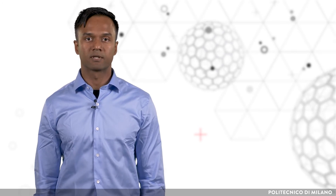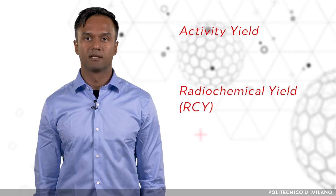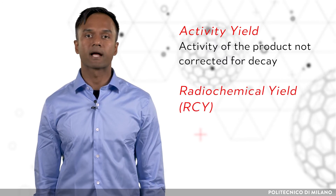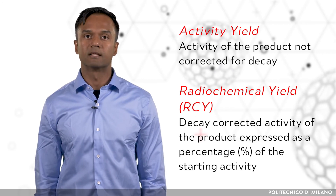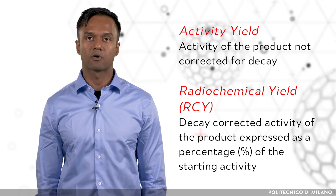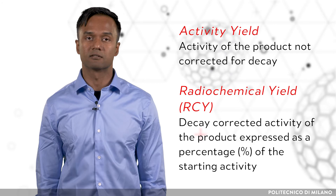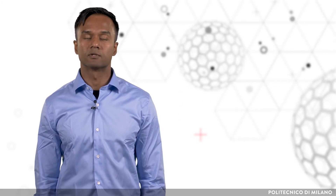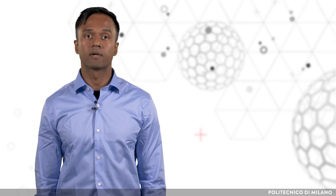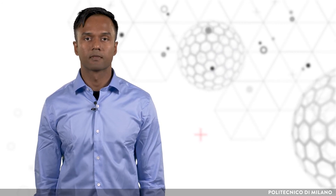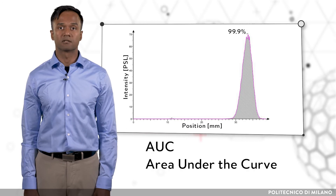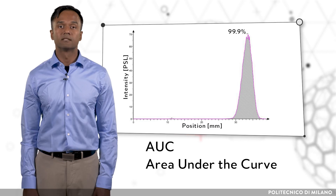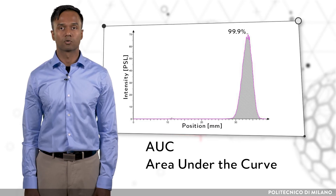The radiotracer yield can be expressed as the activity yield and radiochemical yield. The activity yield is the amount of radioactive product obtained, which is not corrected for decay, whereas the radiochemical yield is calculated from the decay-corrected activity of the product expressed as a percentage of the starting material. With regards to purity, it is important to assess the absence of other compounds — chemical purity — as well as the absence of other radiochemical compounds — radiochemical purity. The radiochemical purity is determined by ITLC and RadioHPLC from the integrated area under the curve (AUC) of the desired compound, expressed as a percentage with respect to the total area under all peaks.